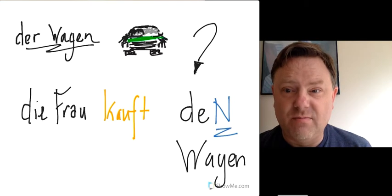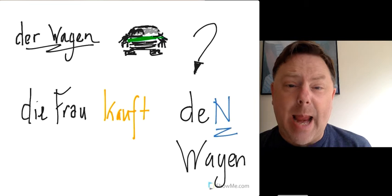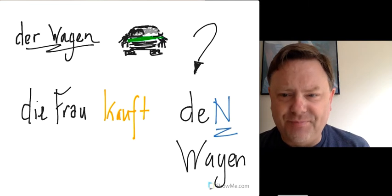For example, der Wagen. Die Frau kauft den Wagen. Der changed to den if it comes after a verb. It's an example of the accusative.